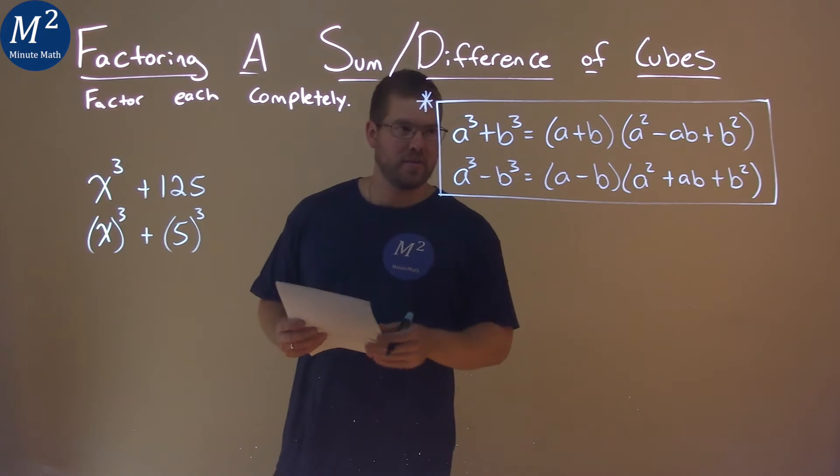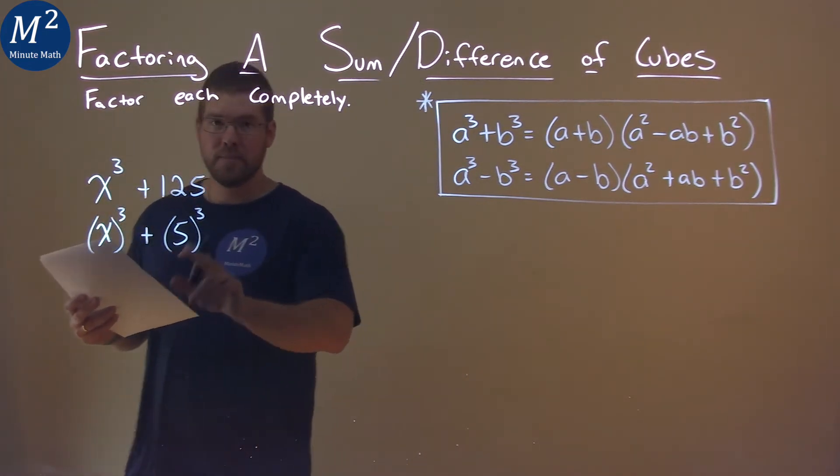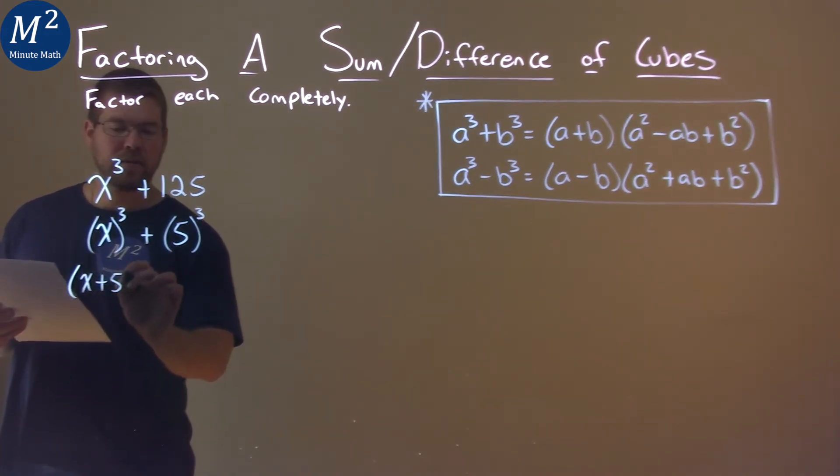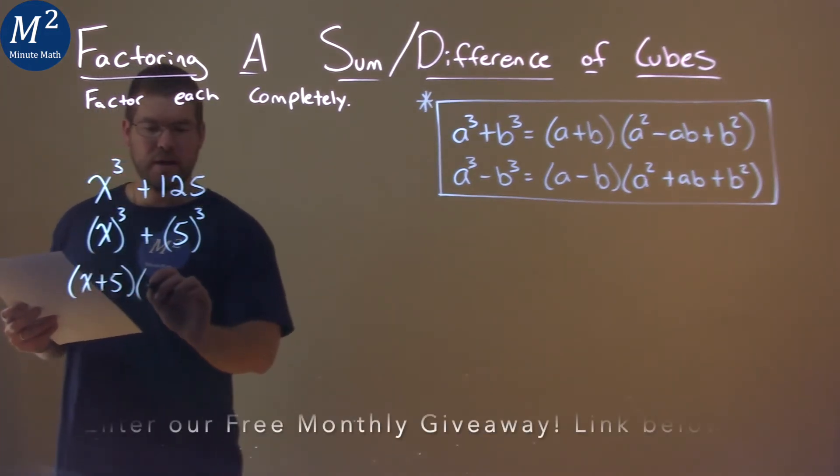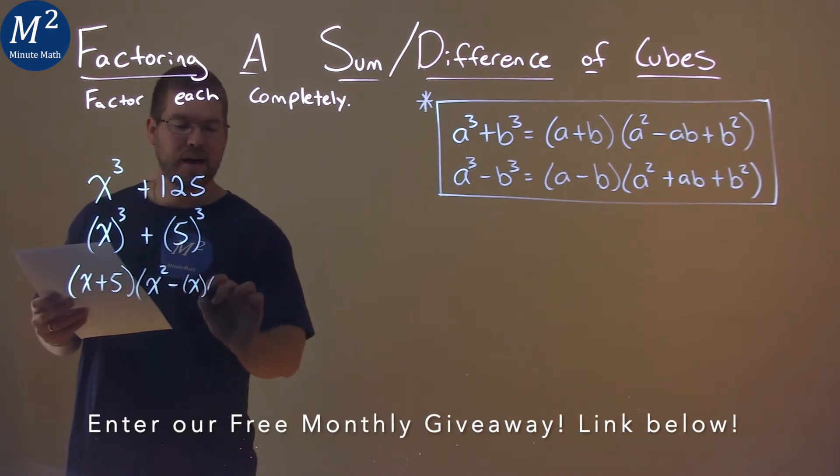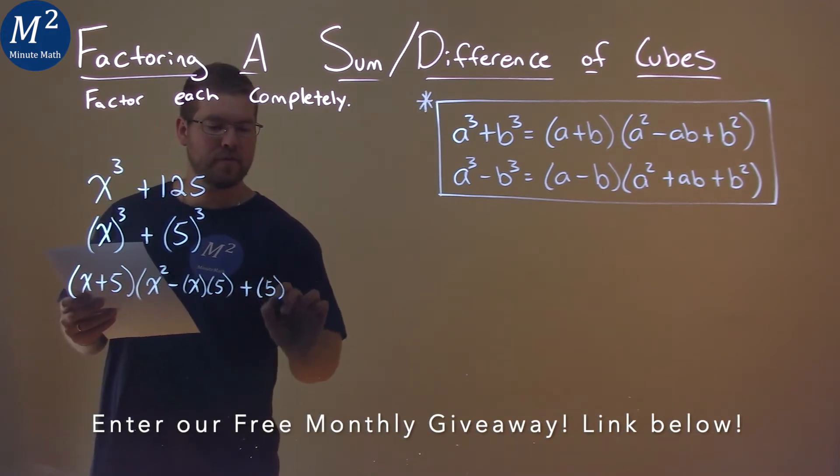We can use the first equation there. So with x being a and 5 being b, we just follow our formula: x plus 5 times x squared minus x times 5, plus, well, 5 squared.